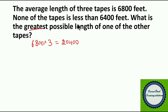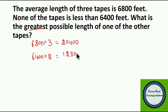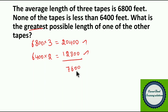Now we have a hint: none of the tapes is less than 6400 feet. Out of 3 tapes, if you imagine 2 tapes are of length 6400, then the total length of the 2 tapes will be 6400 into 2, we get 12,800. The 3 tapes' total length is 20,400; out of that the 2 tapes account for 12,800. Then the length of the 3rd tape is 20,400 minus 12,800, we get 7,600. So 7,600 is the greatest possible length of the 3rd tape — this becomes our answer.